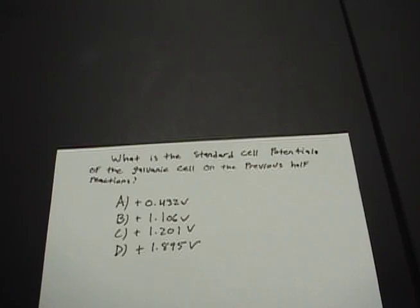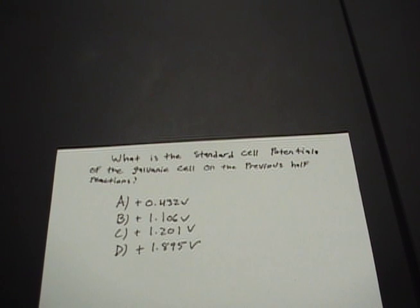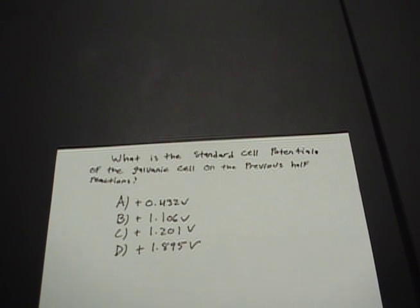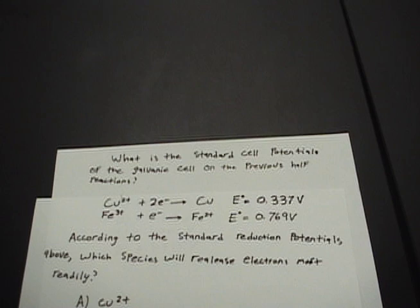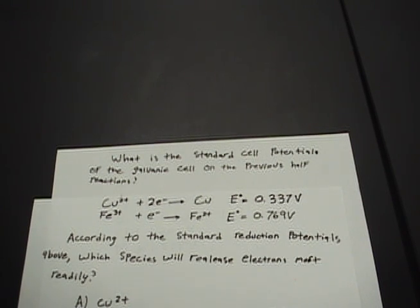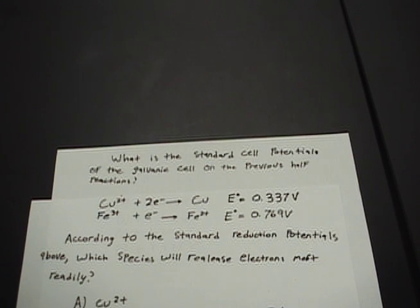Now let's do another example. This problem asks: what is the standard cell potential of the galvanic cell using the previous half-reactions? Based on those half-reactions, all we have to do is plug into our equation: standard cell potential equals standard reduction potential minus standard oxidation potential.